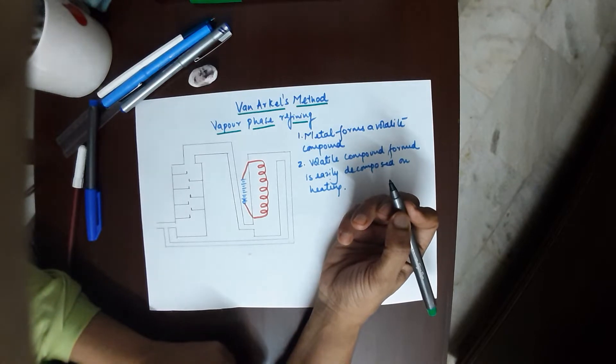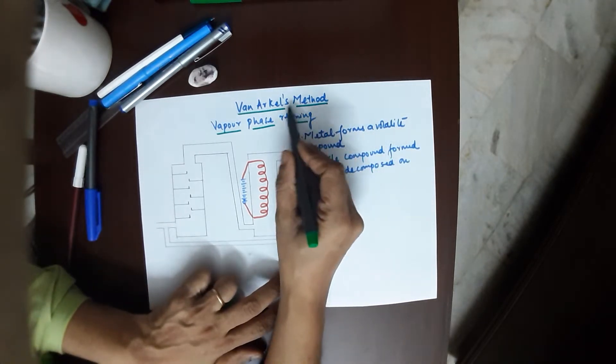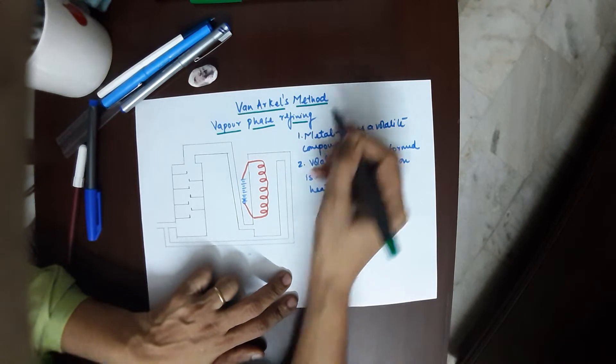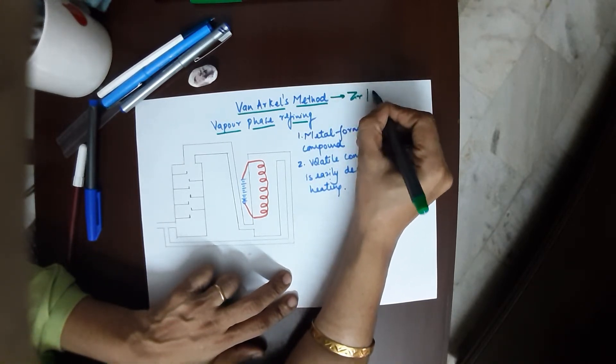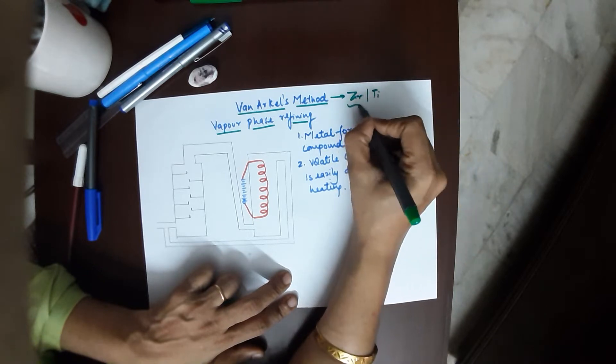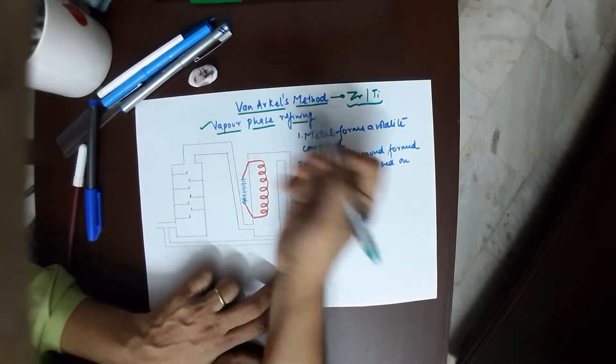This is a topic from the chapter general principles of extraction in class 12th. We are talking about the refining technique called Van Arkel's method. This method is only to refine zirconium and titanium specifically.